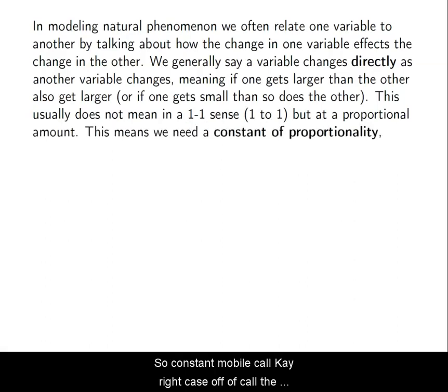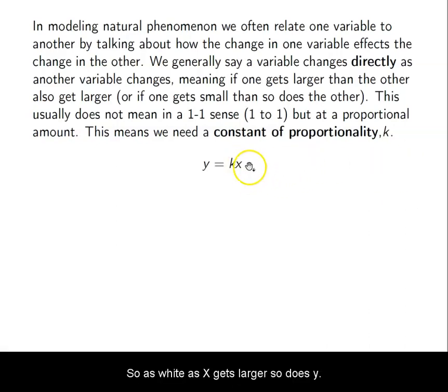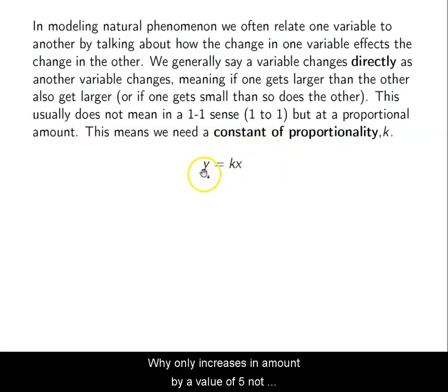So this constant multiple we call k. k is also called the constant of proportionality. So as x gets larger, so does y, and it varies directly. However, let's say that this is one-half. If x goes from 10 to 20, y only increases in amount by a value of 5, not also by a value of 10 like x did. It grows half as fast as the changes in x grow.